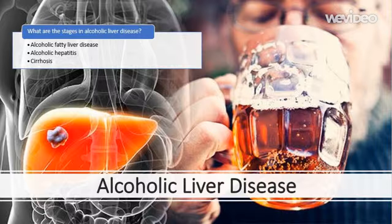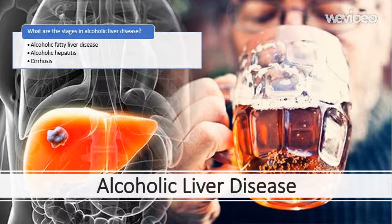Alcoholic hepatitis is the second, more serious stage of alcoholic liver disease. Prolonged alcohol misuse over many years can cause the tissues of the liver to become inflamed. Less commonly, alcoholic hepatitis can occur if you drink a large amount of alcohol in a short period of time — binge drinking. Alcoholic hepatitis is usually reversible, though you may need to stop drinking alcohol for several months or years.